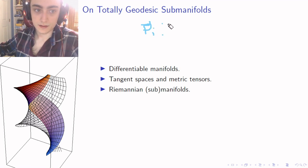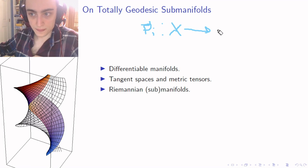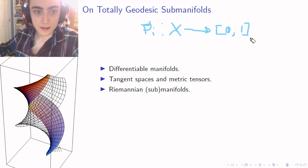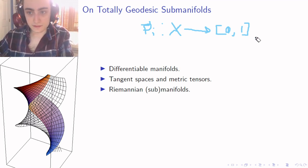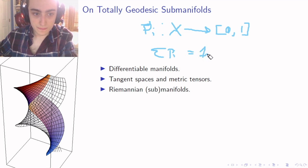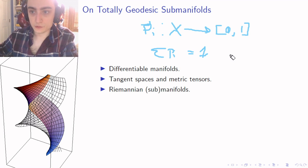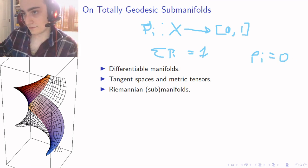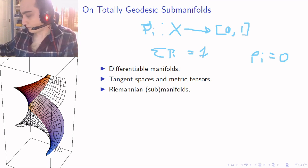A partition of unity is a set of continuous functions PI on a topological manifold X — which in this case will correspond to M — mapping points into the unit interval. A partition of unity has the specific properties that the PIs sum to 1 at every point, and most of the PIs are 0 at each point, but we have a locally finite covering of our manifold.